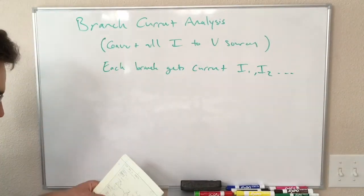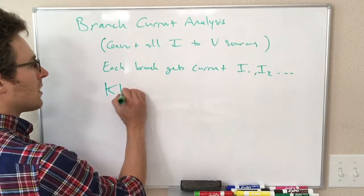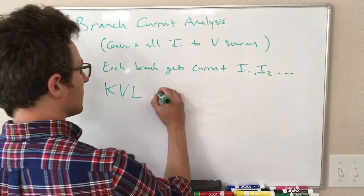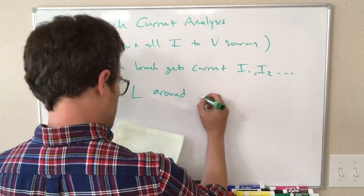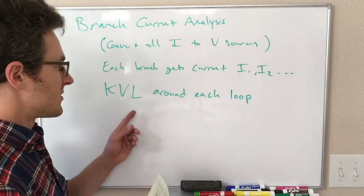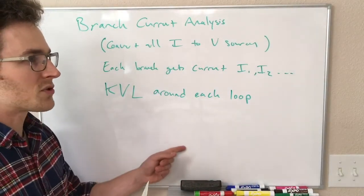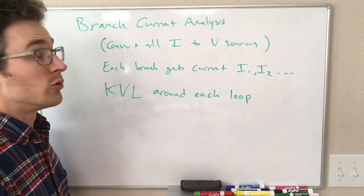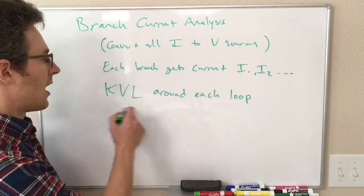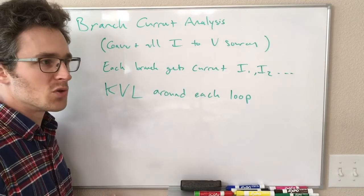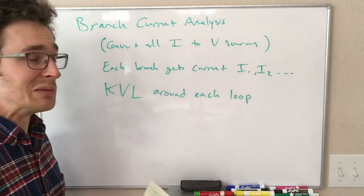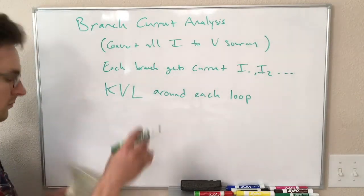And then we do Kirchhoff's voltage law around each unique loop of our circuit. And I'll say right now, if you are drawing loops that include, if you draw loops that entirely include paths included by other loops, those will not be unique. Those will not be unique loops. They will be linearly dependent, they will not provide new information. But yeah, more on that once we have a picture.